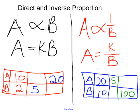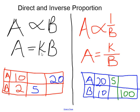Hello guys, we're going to be talking about direct and inverse proportion. The first thing we need to know is this constant sign here, which we call the proportional constant, or constant of proportionality. For example, a is directly proportional to b — this is how you write it, it looks like a fish sign. You have to write it as an equation, which is a equals kb, where k is the constant of proportionality.